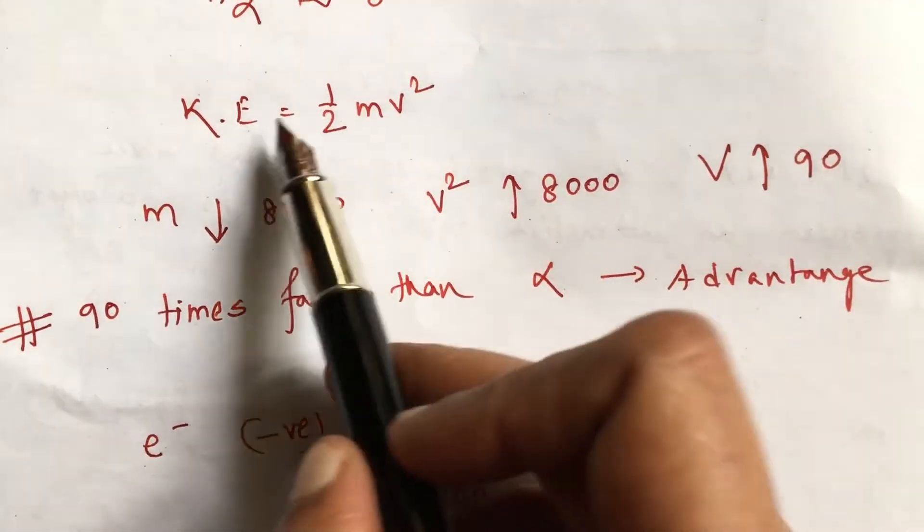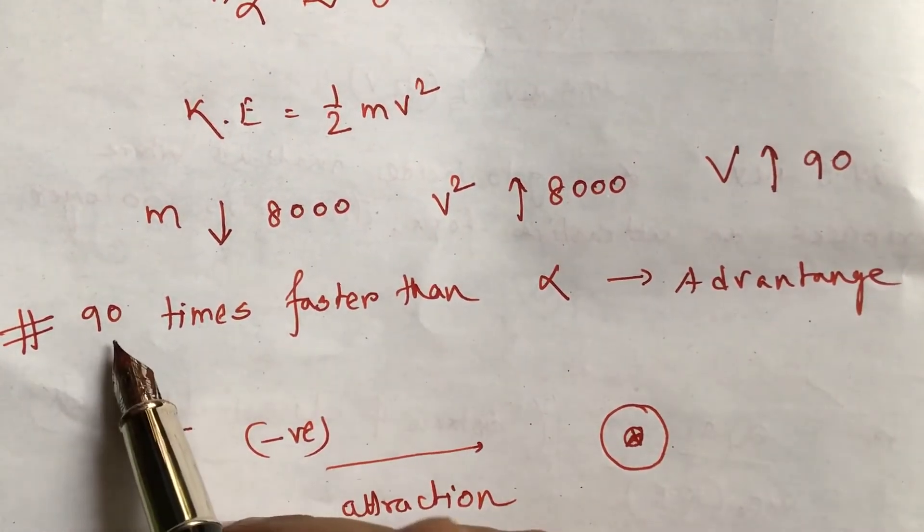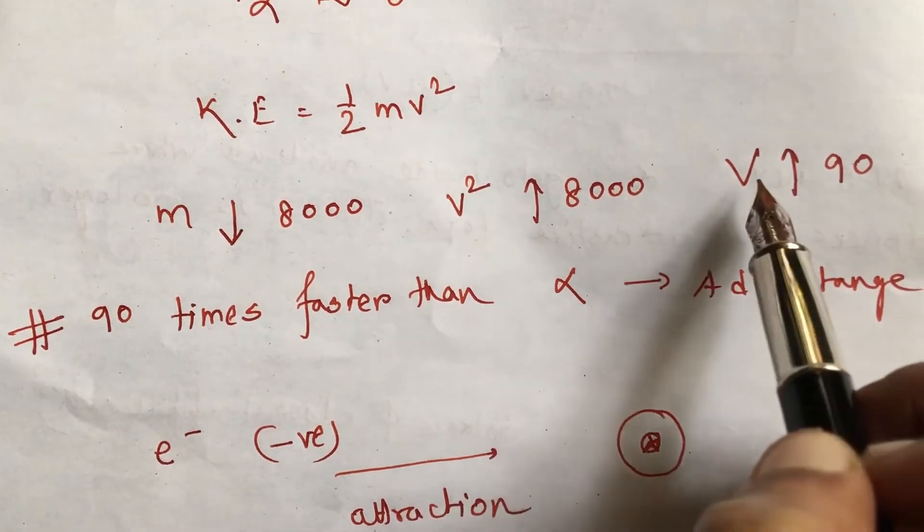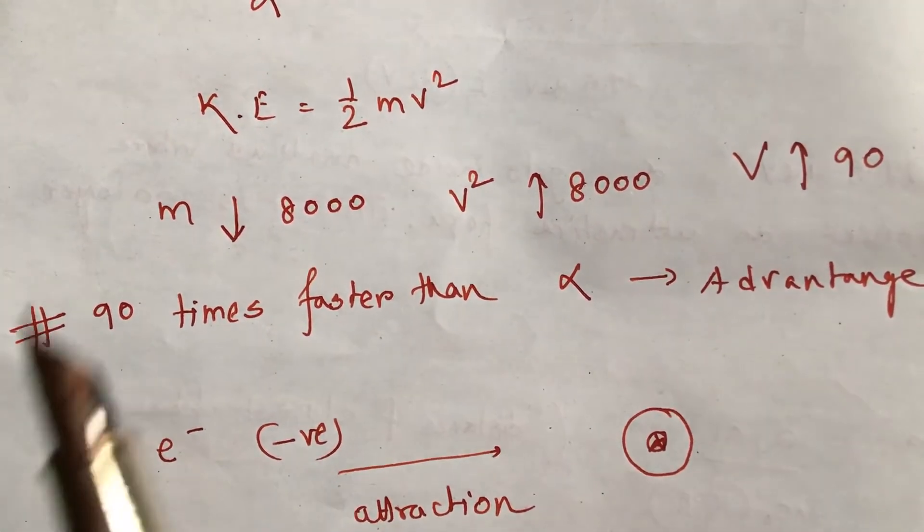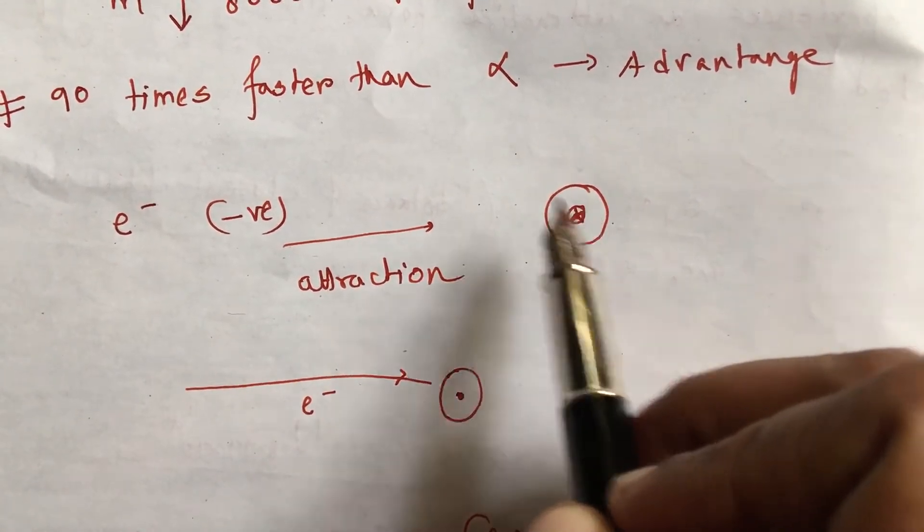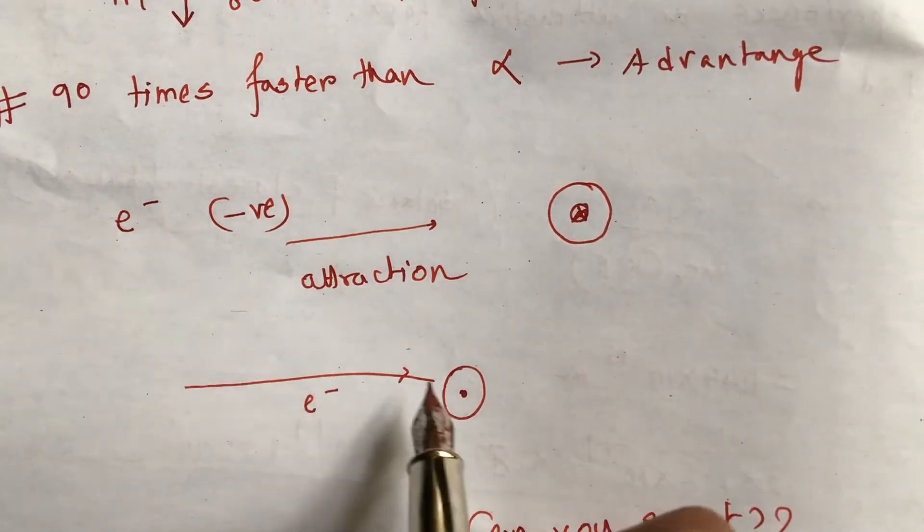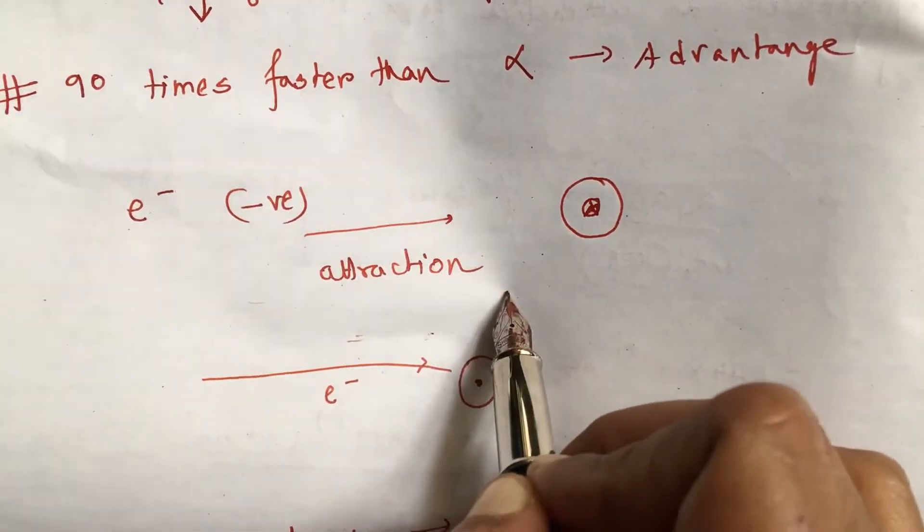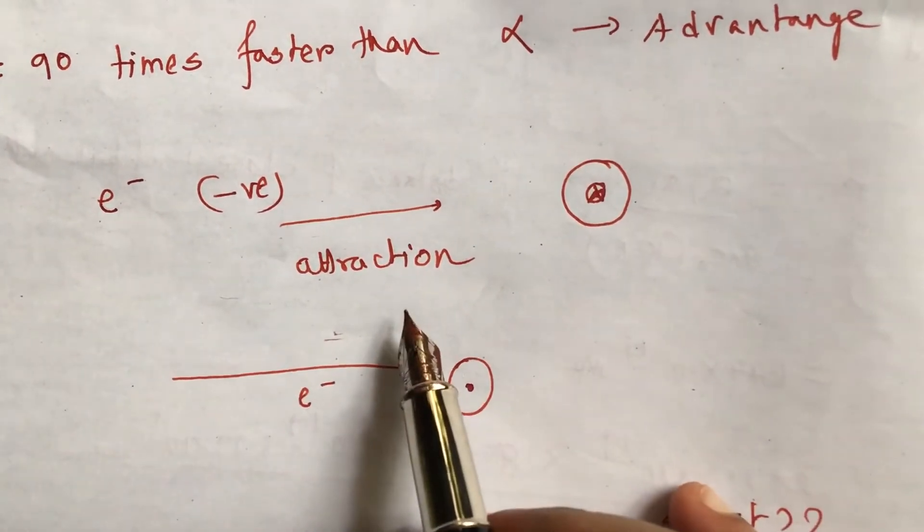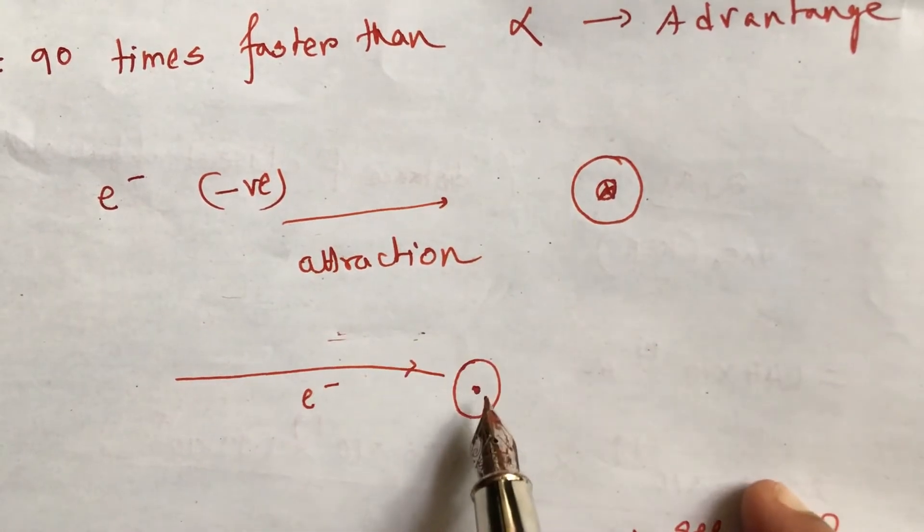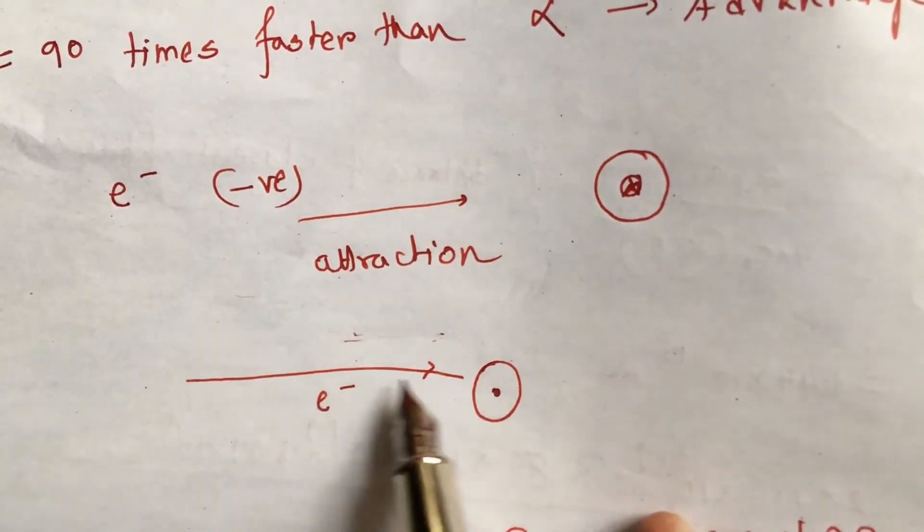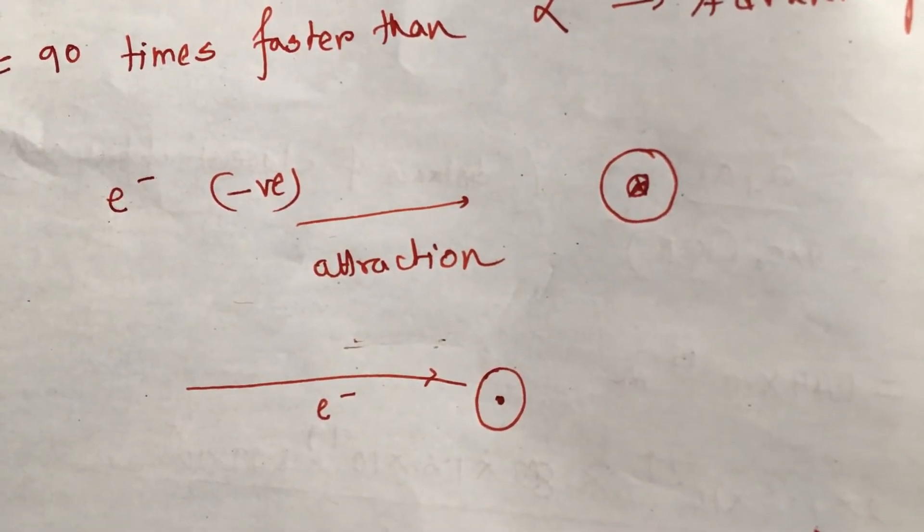So with the same kinetic energy, if we employ electrons, we get 90 times faster electrons than if we use alpha particles. There is one more advantage which is electron is negatively charged, nucleus is positively charged. So we get an attractive type of deflection like this rather than this type of deflection in case of alpha particle.